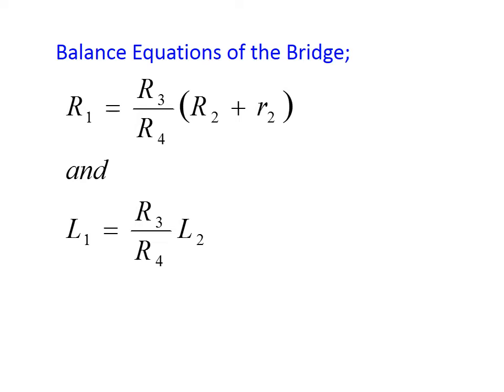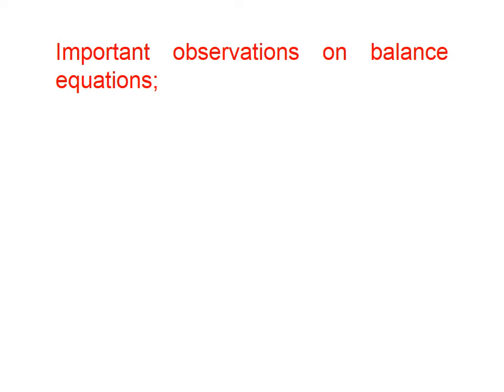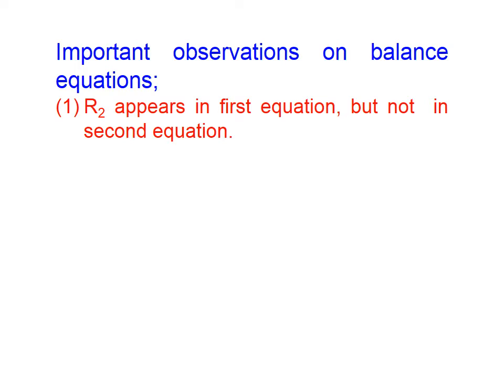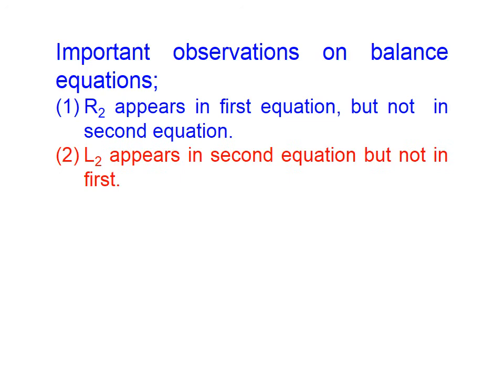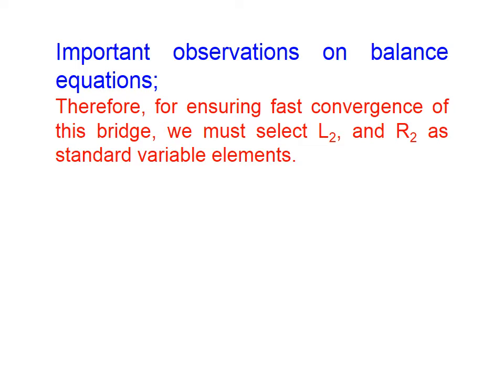Following are the important observations on the balance equations. R2 appears in the first equation but not in the second equation, while L2 appears in the second equation but not in the first. Therefore, for ensuring fast convergence of this bridge, we must select L2 and R2 as standard variable elements.